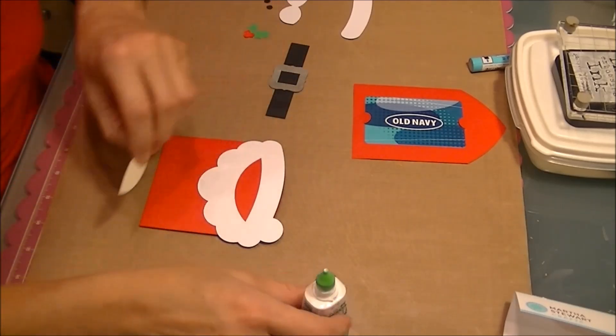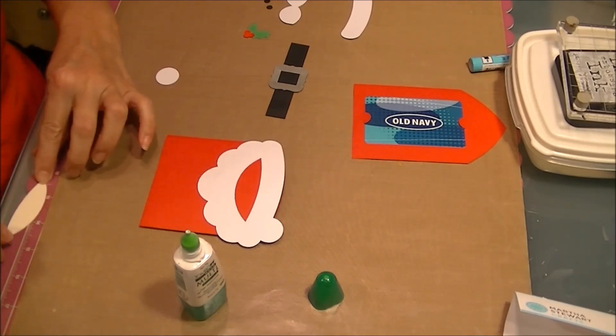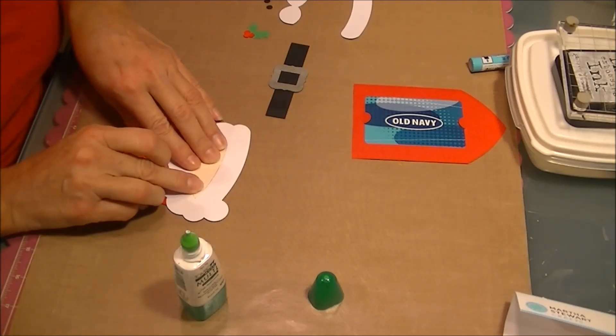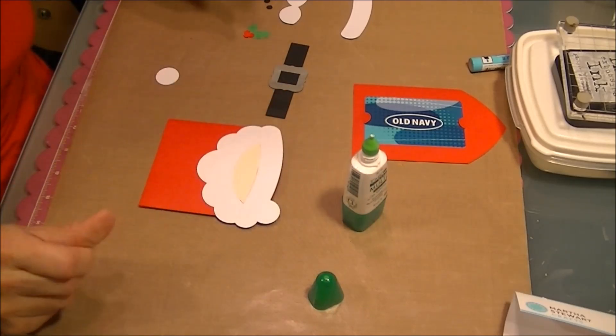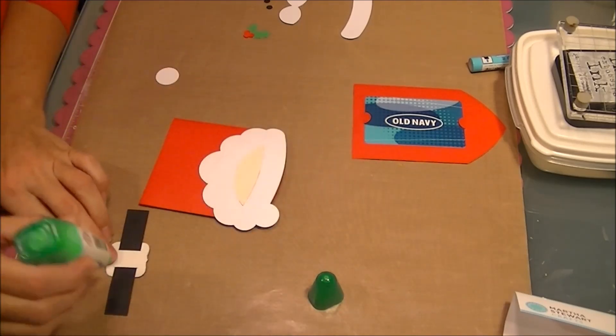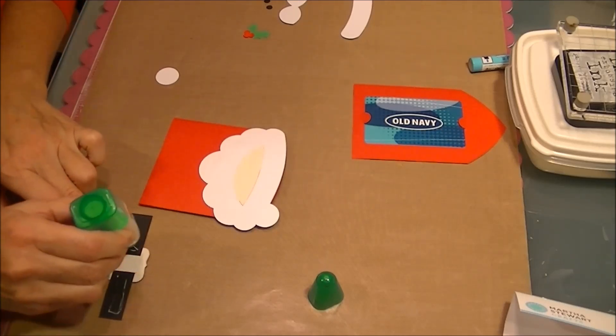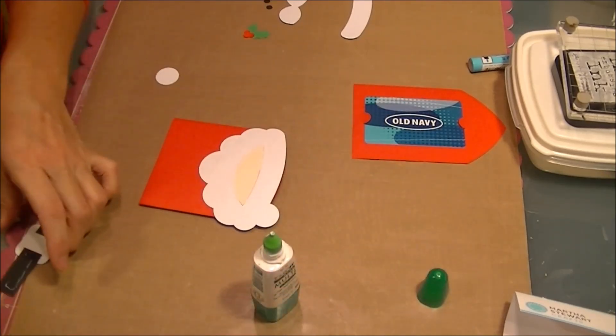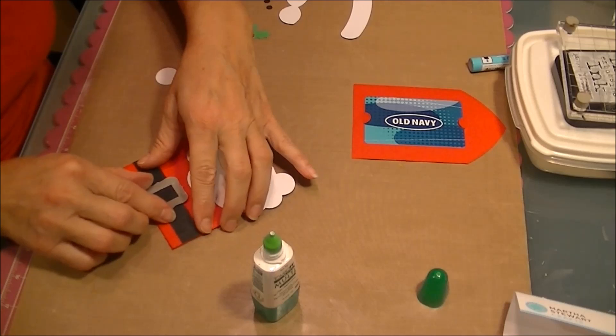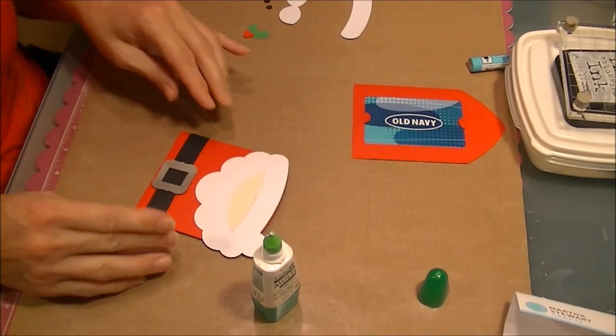This part is going to be part of his mouth. That's going to go right inside there. We'll go ahead and put his belt buckle on which is going to go right down here. Slide this over a little bit to get centered.